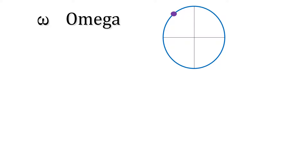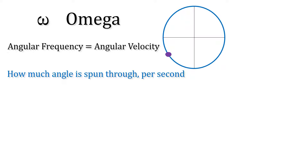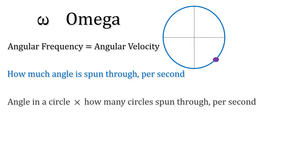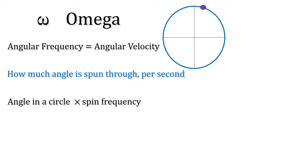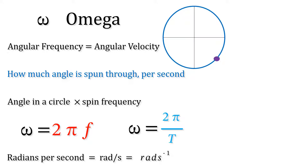Understanding omega: omega is the angular frequency or angular velocity — it's how much angle is spun through per second. It's the angle in a circle times how many circles we spin through per second, so it's equal to 2 pi times f, where f is the frequency of the spin. It's also equal to 2 pi over the period, and its units are radians per second.